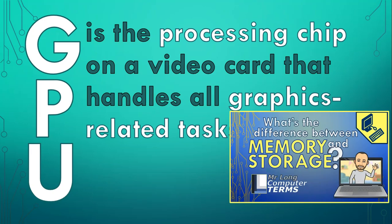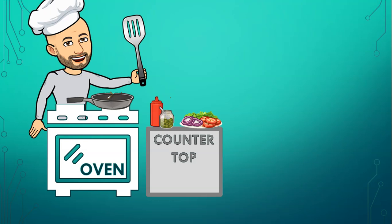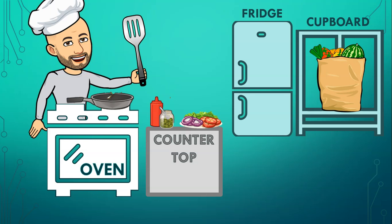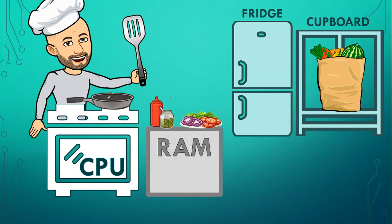In our video on the difference between memory and storage, we compared the inside of a computer with a kitchen. We cook our hamburger patties and onions on the oven, and we keep the ingredients we're currently using on our countertop, like the buns, tomato and lettuce. We store all our ingredients and cooking equipment in cupboards and fridges. The oven is like the CPU, the countertop is like memory or RAM, and the cupboards and fridges are like the computer's hard drive or flash drive.